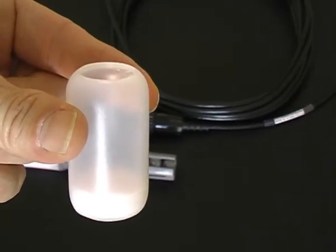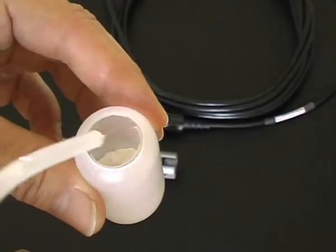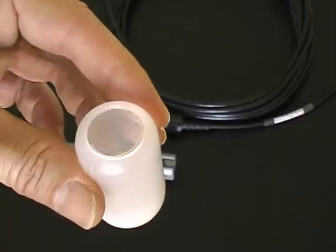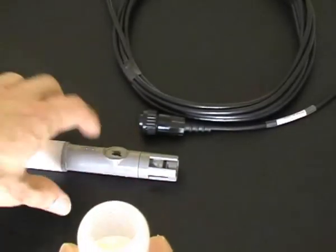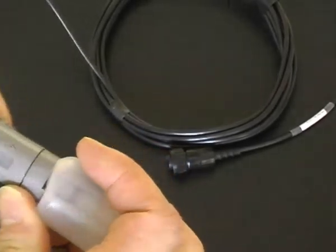To store the dissolved oxygen sensor, place a sponge in the bottom of the wetting cap and moisten it with water. Place the wetting cap on the sensor and store.